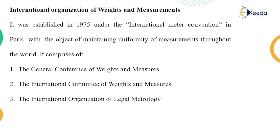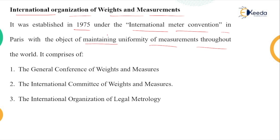Now we will see the international organization of weights and measures. This body looks after all the international formulation of standards and was established in 1875 under the International Metre Convention in Paris. The objective is to maintain the uniformity of measurement throughout the world. There are three main bodies of this organization: the General Conference of Weights and Measures, the International Committee of Weights and Measures, and the International Organization of Legal Metrology.